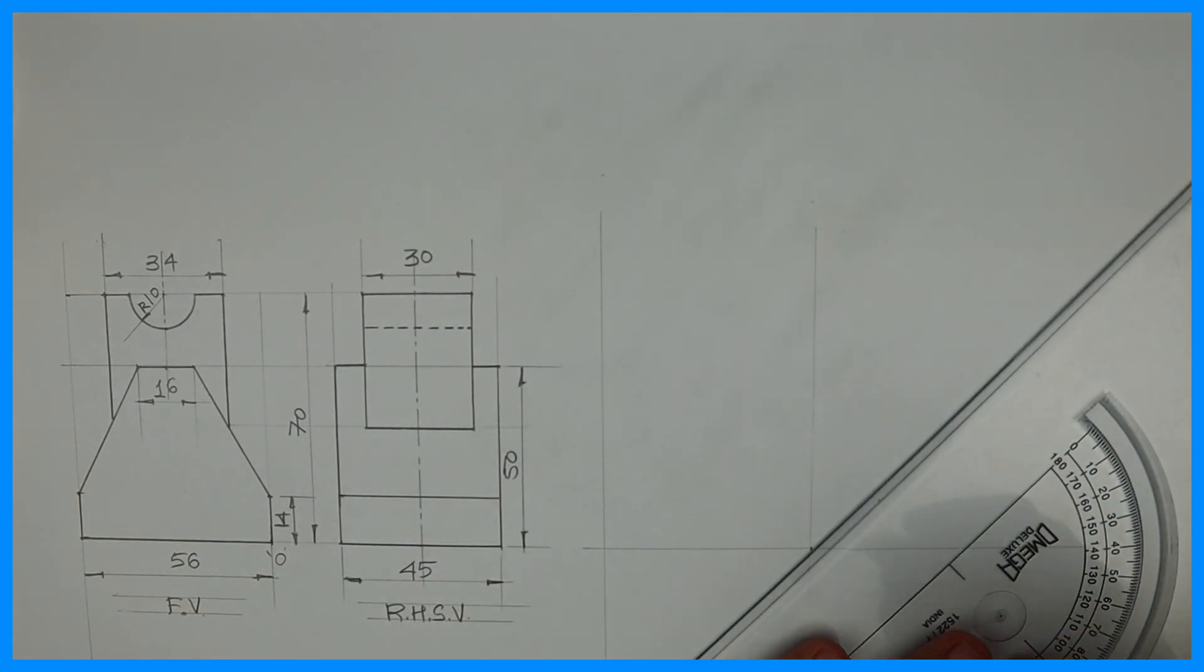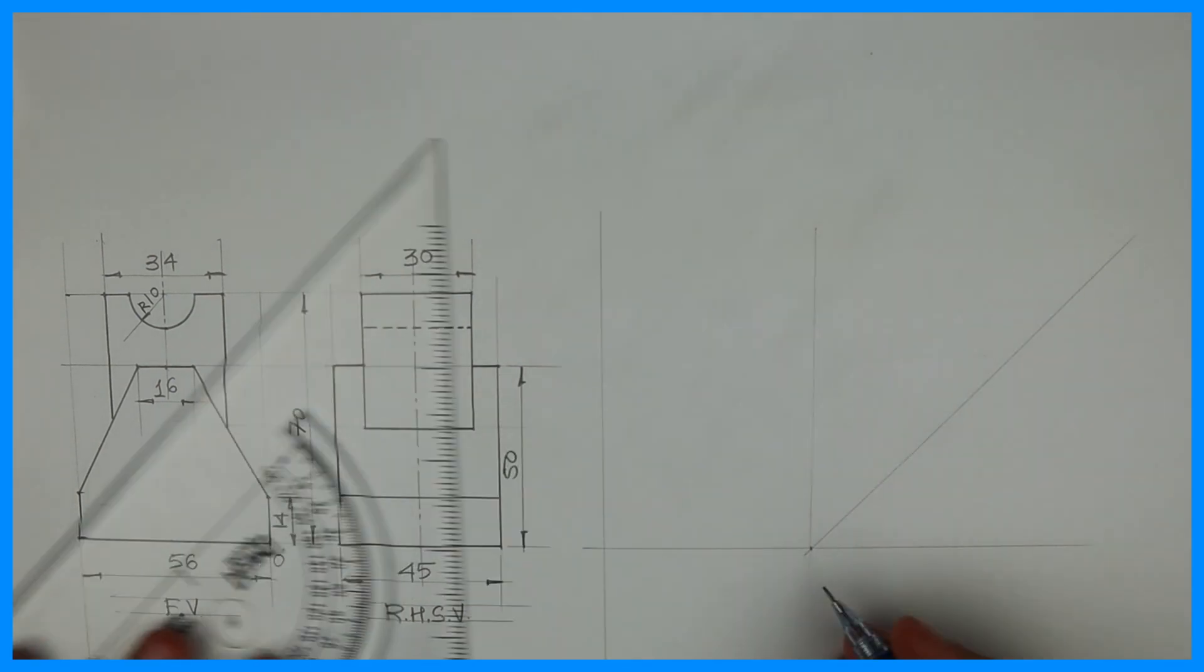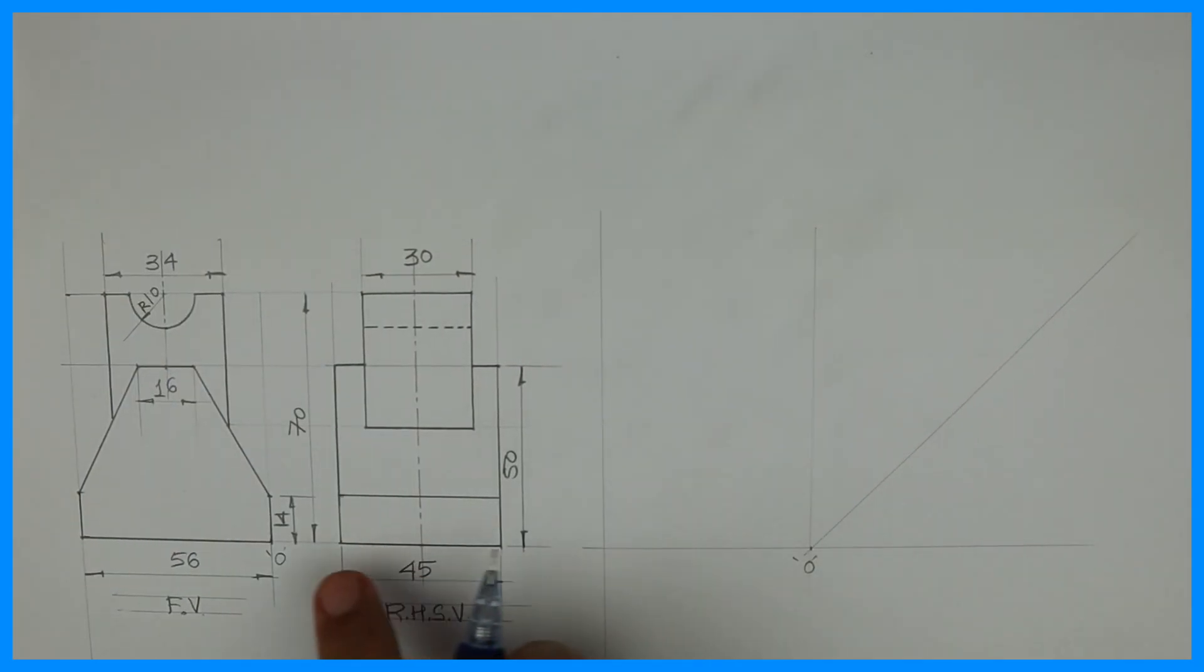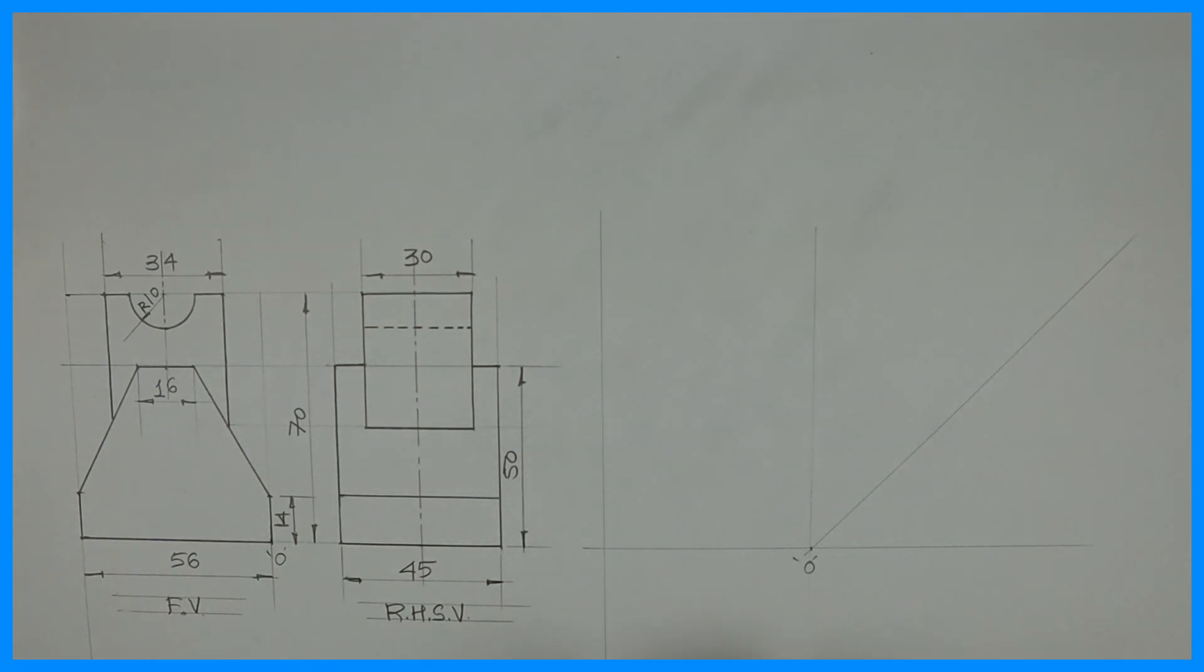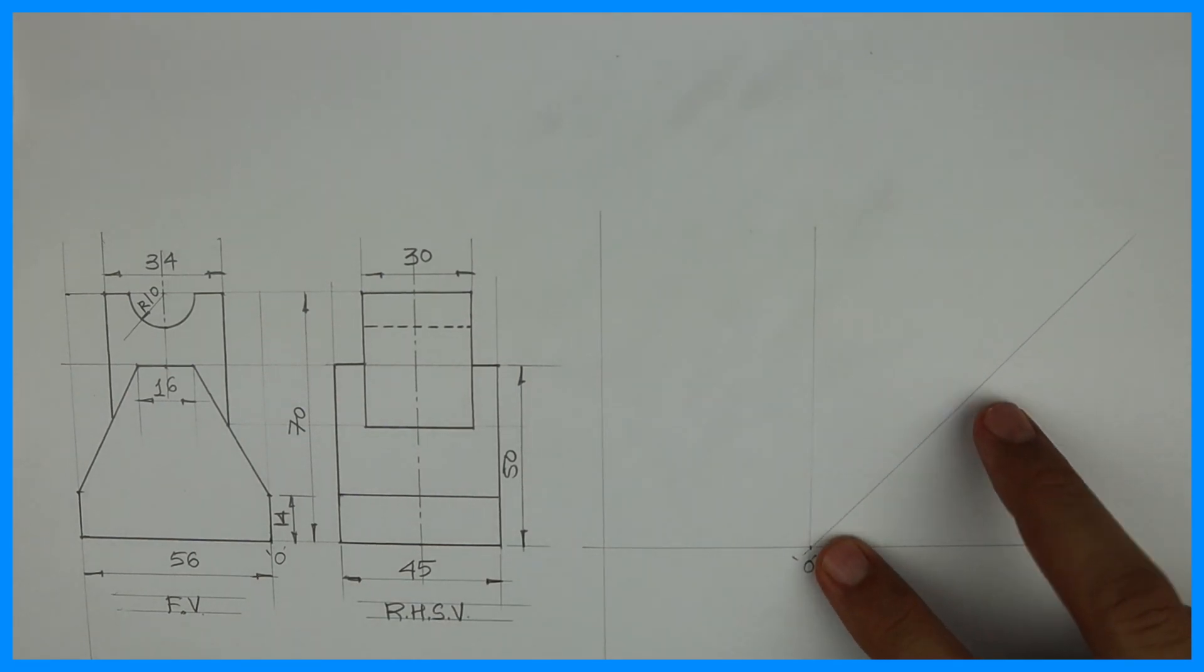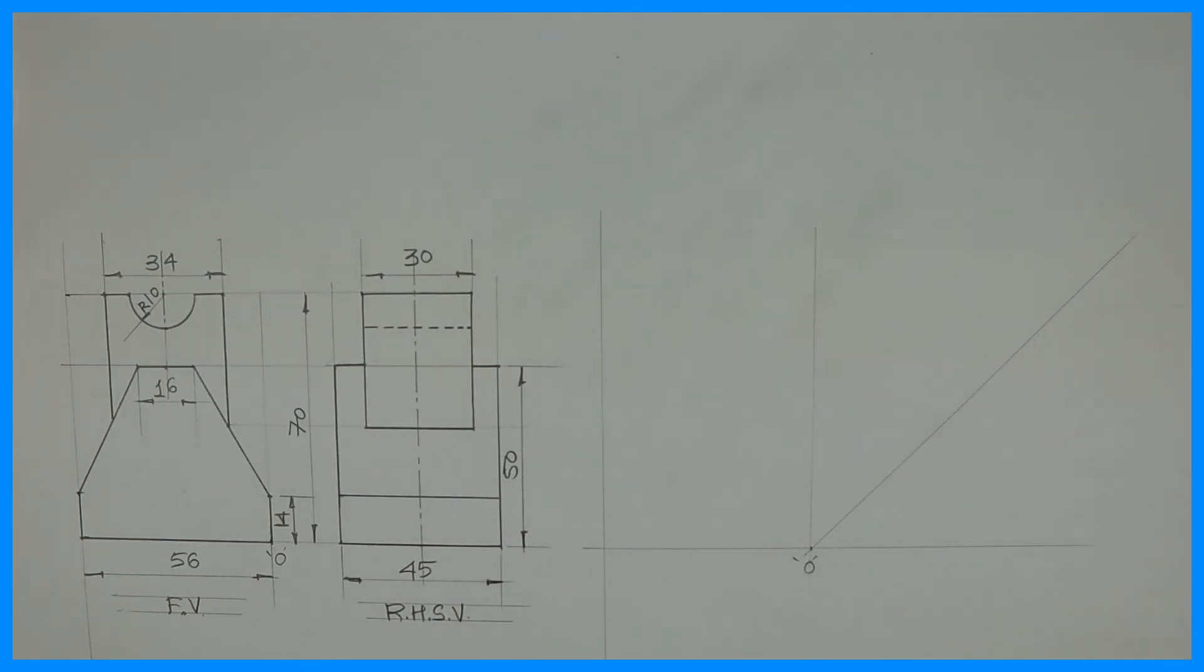See this, so we'll mark 56 and we'll write origin on the right side. So the 45-degree receding angle will go on right side, so you will automatically get right inside view on right side. See, front view is here, right inside view will be here. This is 45 and height is 70.